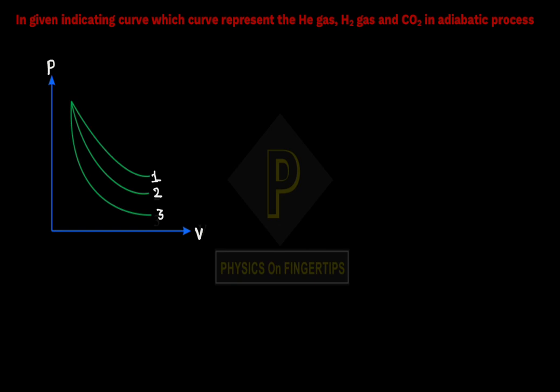Next question is, in given indicating curve, which curve represents the He gas, H₂ gas and CO₂ in adiabatic process?